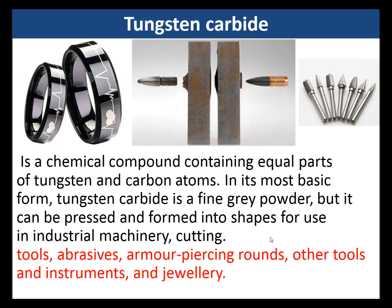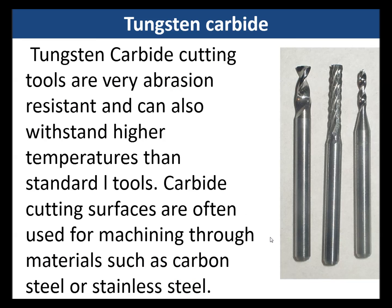Tungsten carbide is a Cermet and is a chemical compound containing equal parts tungsten and carbon atoms. In its most basic form it is a powder, but it can be pressed and formed into things like tools, armour-piercing bullets, and even jewellery. Tungsten carbide cutting tools are very abrasion resistant and can withstand higher temperatures than standard tools, and are often used for cutting through very hard materials such as carbon steel or stainless steel.